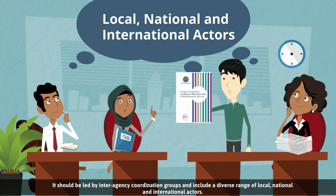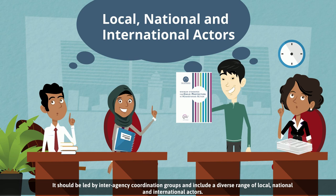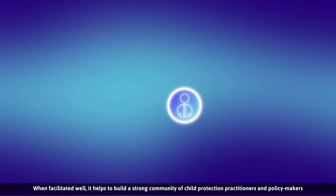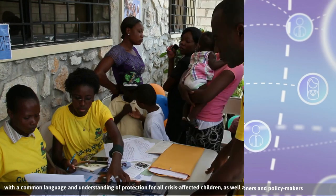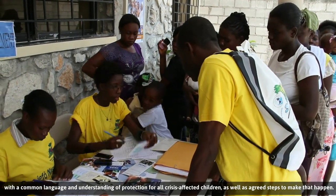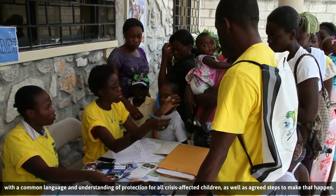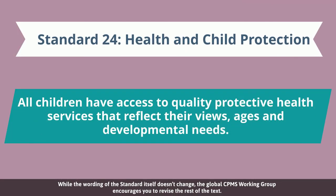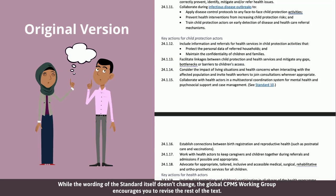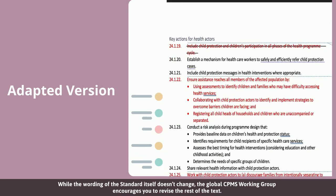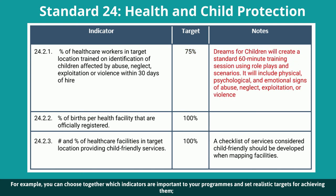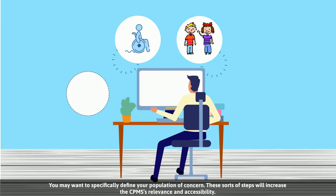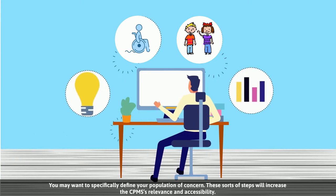Contextualization should be led by interagency coordination groups and include a diverse range of local, national and international actors. When facilitated well, it helps to build a strong community of child protection practitioners and policy makers with a common language and understanding of protection for all crisis-affected children, as well as agreed steps to make that happen. While the wording of the standard itself doesn't change, the Global CPMS Working Group encourages you to revise the rest of the text. For example, you can choose together which indicators are important to your programs and set realistic targets for achieving them. You may want to specifically define your population of concern. These sorts of steps will increase the CPMS's relevance and accessibility.